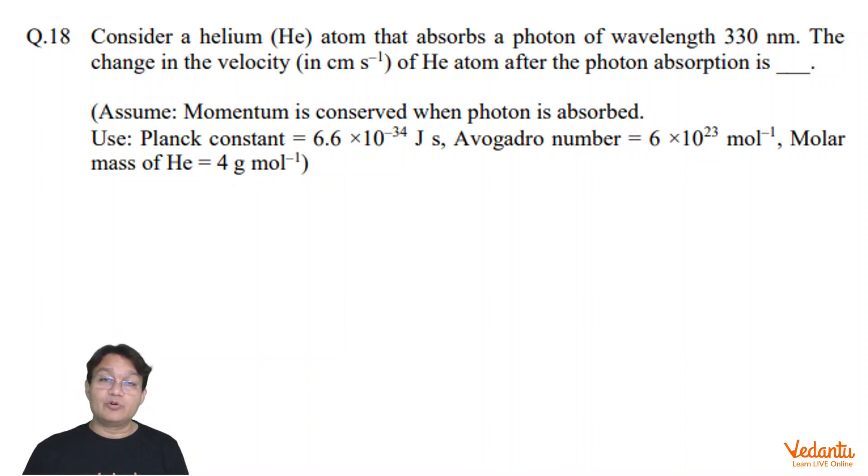Assume momentum is conserved when photon is absorbed. When momentum is conserved, we have to use the funda that the momentum of photon is given by h by lambda.